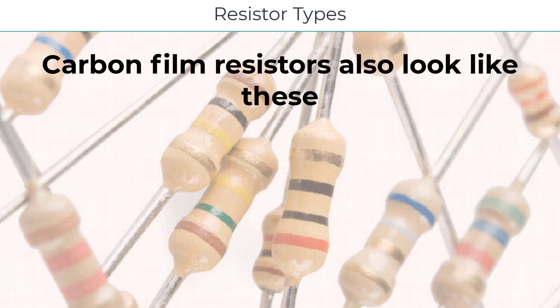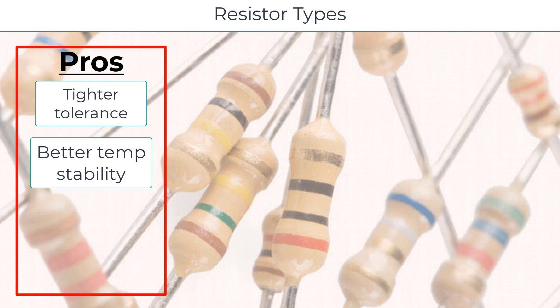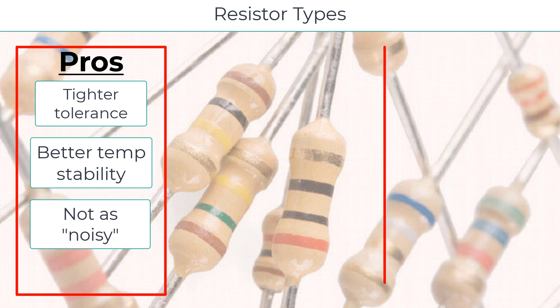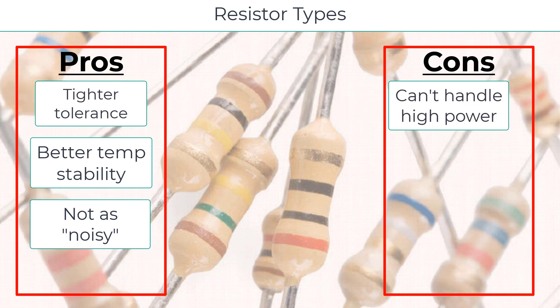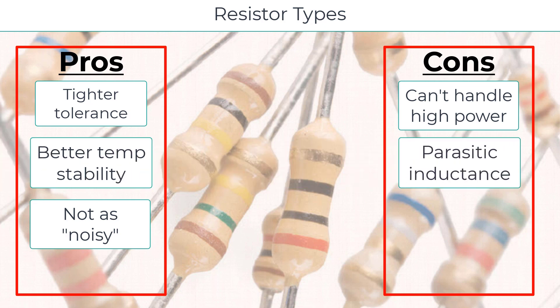Next, we have the carbon film resistor. Similar in appearance to carbon composition resistors, they're made by depositing a thin film of resistive material onto an insulating substrate. The film is then cut to obtain the desired number of ohms. Carbon film resistors have a tighter tolerance and better temperature stability than carbon composition resistors. They also have less internally generated noise. The downside is that film resistors in general are unable to handle larger amounts of power because the film is so thin. They sometimes also have parasitic inductance, so keep this in mind for high frequency applications. Surface mount resistors are film resistors.